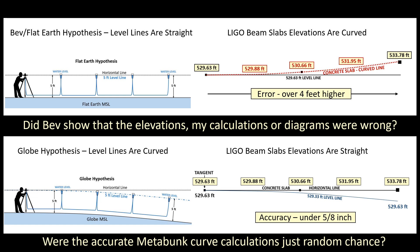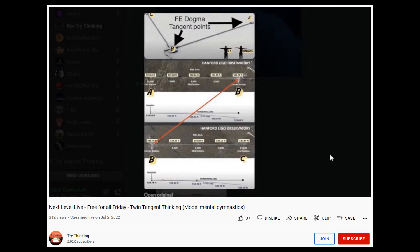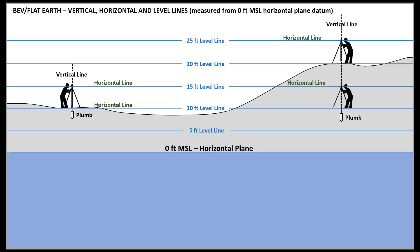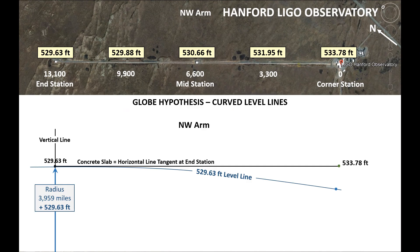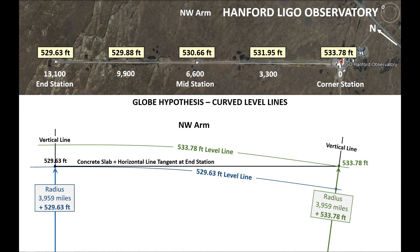When Bev reviewed my video, did he show that the elevations, my calculations, or any of my diagrams were wrong? Of course not. He needed content, so he made a straw man saying the Northwest Arm was tangent at both ends. Bev likes to call people in the globe community 'model afflicted,' but he is really the one afflicted with this model of straight level lines. He's been in this debate a long time, so by now he should understand that on the globe, level lines of different elevations are concentric circles. The concrete slab is tangent to the end station — and since we live on a globe, that's a radius of 3,959 miles plus the additional 529.63 feet. The end station has a higher elevation, meaning the radius is larger, and there is no geometry that says the Northwest Arm can be tangent to two concentric circles with different radii.